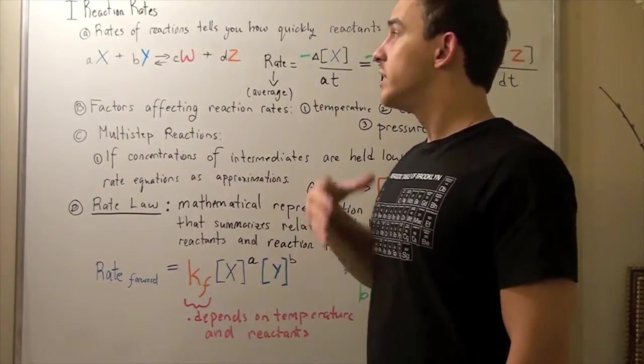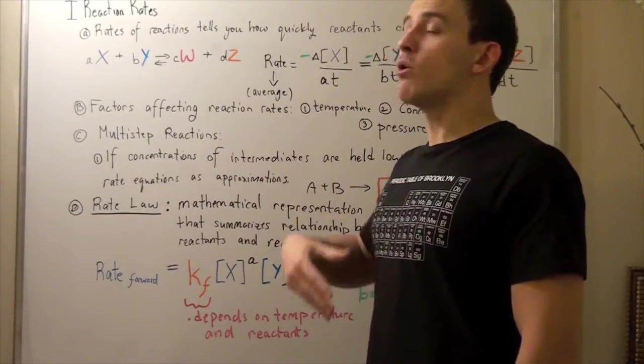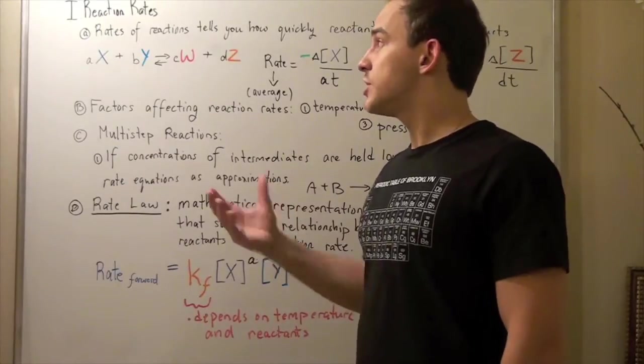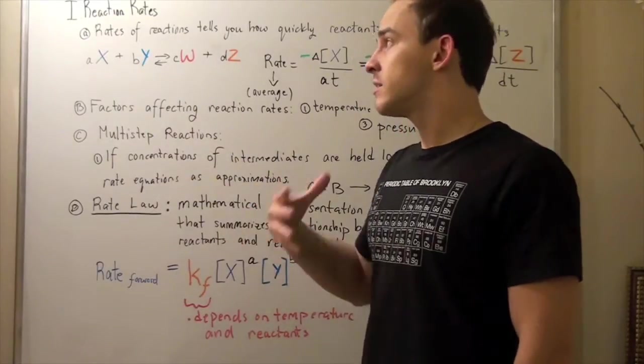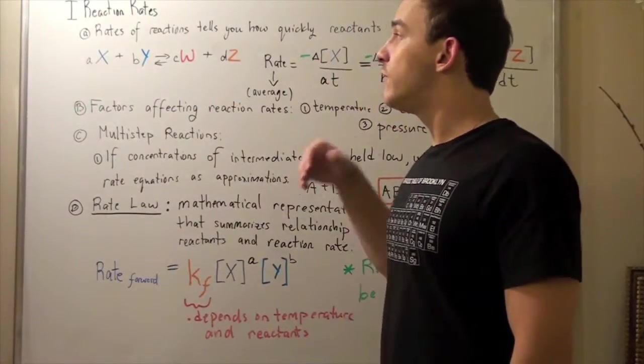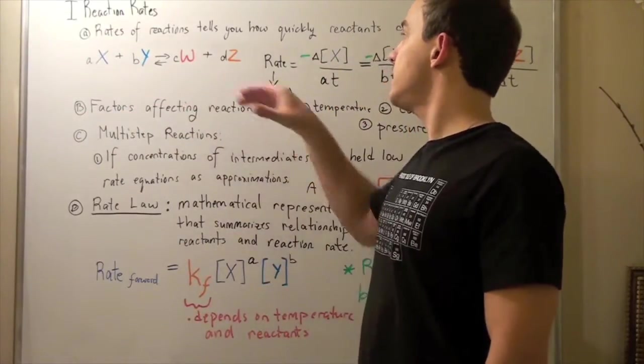Therefore, the rates of these guys are negative. Because remember, we're subtracting our initial from final. An initial concentration of X is larger than final concentration of X. The final will be less. We'll have less X and Y at the end, because some of these guys will convert to W and Z.